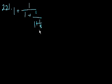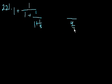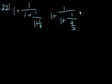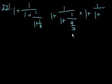If we do 1 plus 1 third, that's 3 thirds plus 1 third, so that's 4 thirds. So then that turns into 1 plus 1 over 1 plus — what's 1 over 4 thirds? That's the same thing as 1 divided by 4 thirds, which is 1 times 3 fourths. So that's equal to 3 fourths.